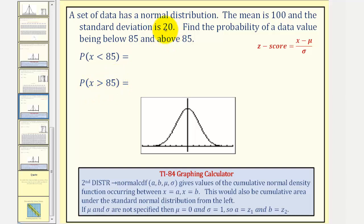Notice how 85 is less than one standard deviation below the mean of 100. So let's begin by modeling this distribution. Mu, or the mean, is 100, which would be here in the middle. And again, 85 would be less than one standard deviation below the mean, maybe somewhere in here.